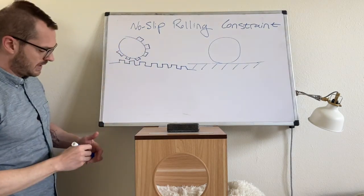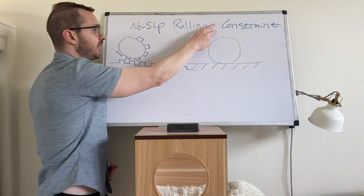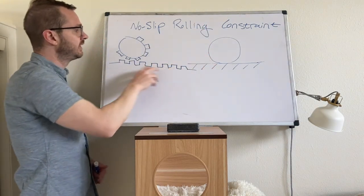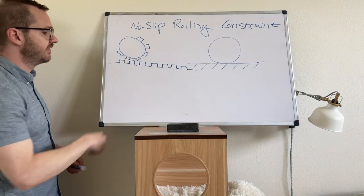This is a rack and pinion system. So the same constraint that we're going to derive for this rolling disc, you can also use that in this case.